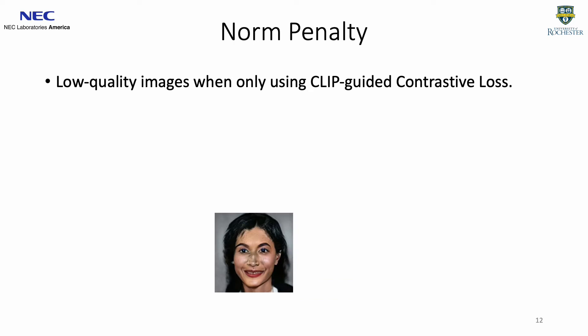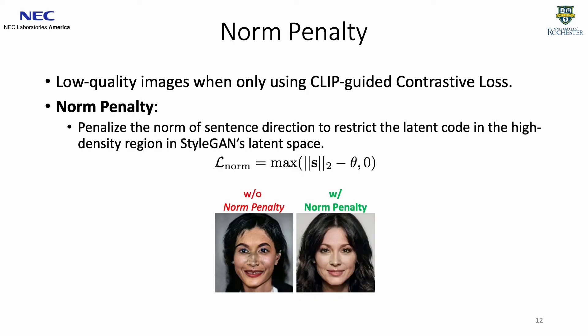However, we find that using CLIP-guided contrastive loss alone leads to poor image quality. To address this problem, we propose norm penalty, which penalizes the norm of the sentence direction to restrict the latent code in the high-density region in StyleGAN's latent space, resulting in better image quality.